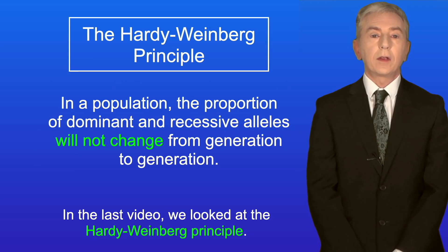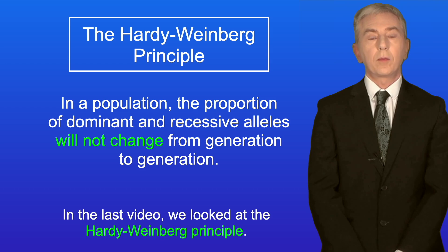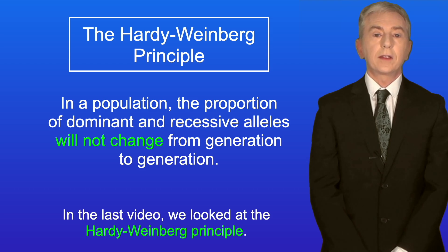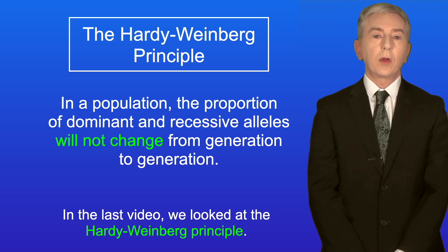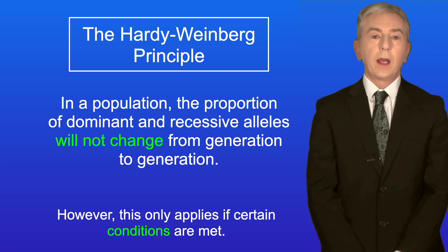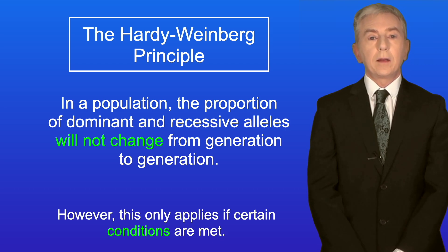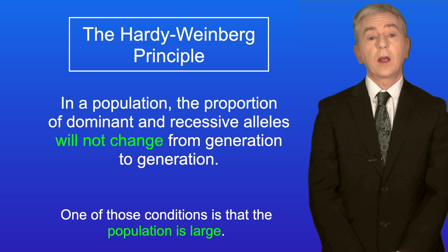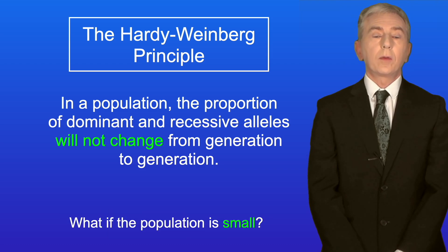In the last video we looked at the Hardy-Weinberg principle, which states that in a population the proportion of dominant and recessive alleles will not change from generation to generation. However, this only applies if certain conditions are met, and one of those conditions is that the population is large. But what if the population is small?